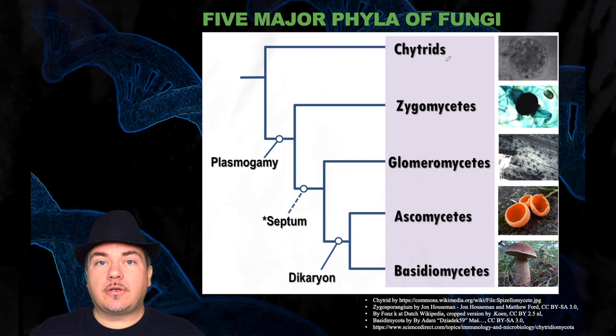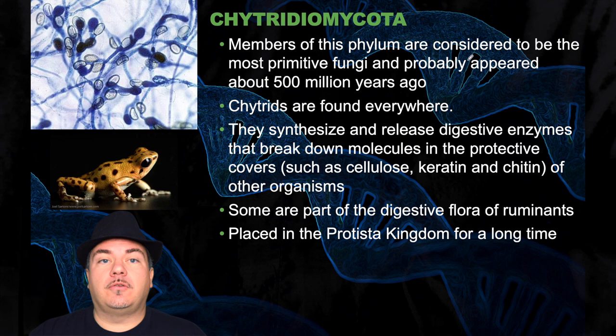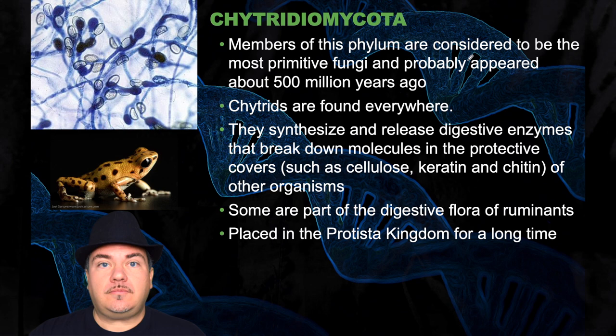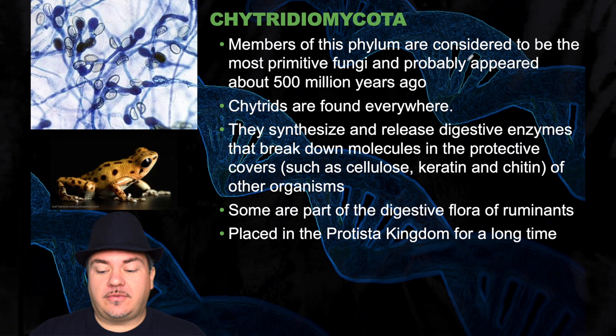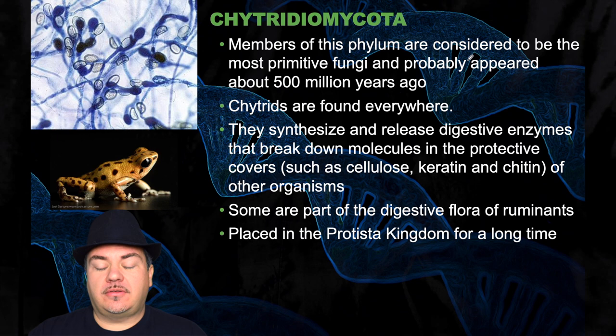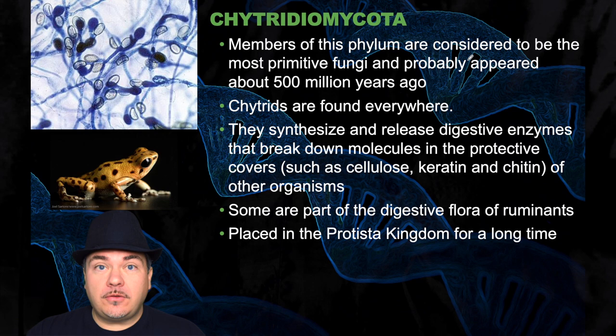Members of this phylum are considered to be the most primitive fungi and probably appeared about 500 million years ago. These fungi are found everywhere. They synthesize and release digestive enzymes to break down molecules in the protective covers of other organisms, things like chitin or cellulose. Some of these are found in the digestive flora of ruminants — things like cows — that have organisms inside their stomachs that help them digest their food. This category of fungi were for a long time categorized as protists.